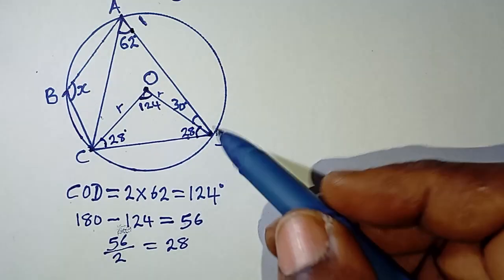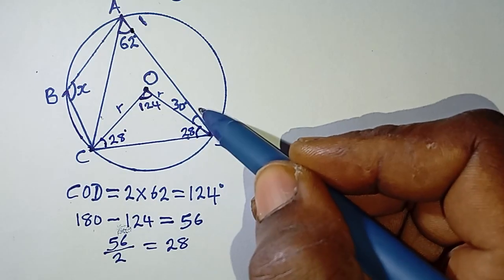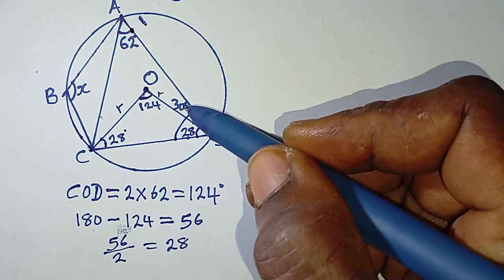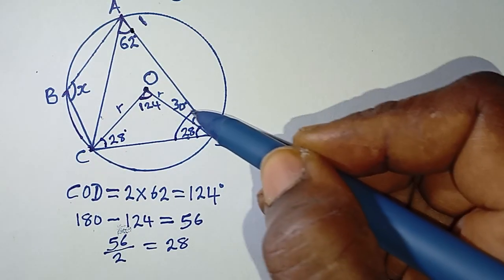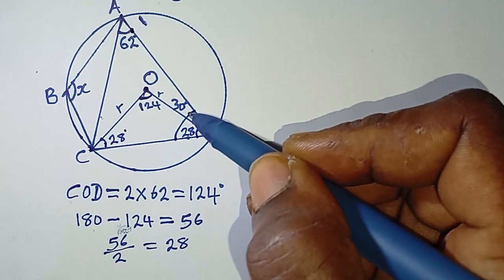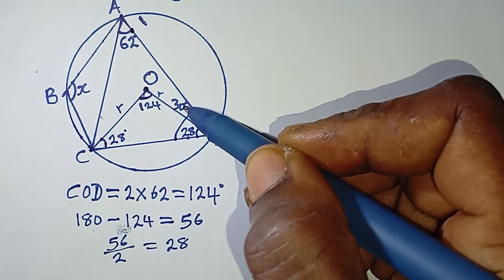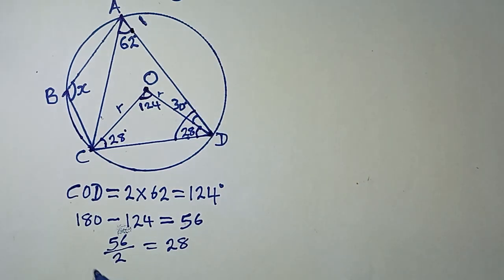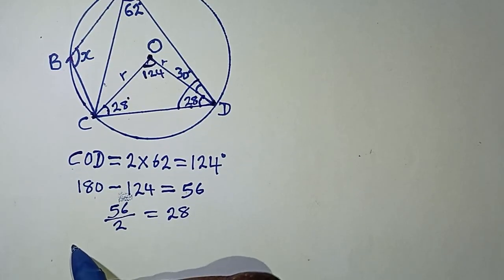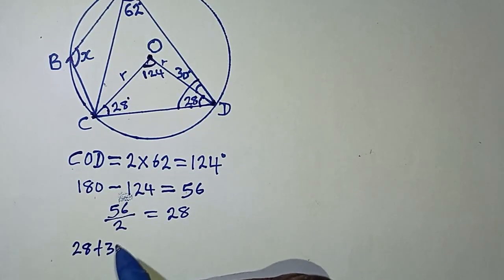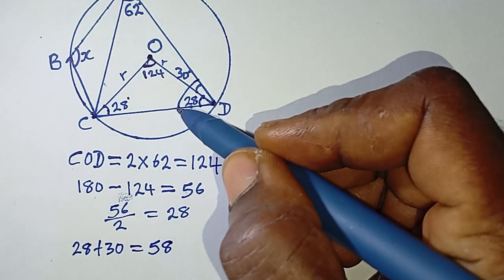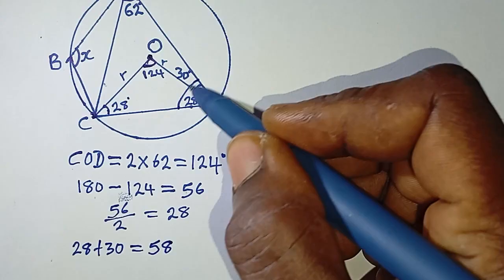Now we can find the complete angle. This part is 30°, given to us, and we now know this part is 28°. So the full angle is 28 plus 30, which equals 58 degrees.